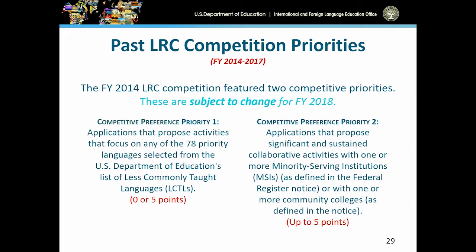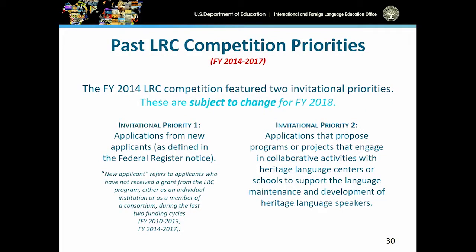Our current LRC invitational priorities — which may be subject to change — include: first, applications from new applicants as defined in the Federal Register notice. If you're listening in for the first time and you're not a current grantee, you're not at a disadvantage — we're encouraging you to participate and apply for this next round of grant awards. The second invitational priority is for applicants proposing programs or projects that engage in collaborative activities with heritage language centers or schools that support the language maintenance and development of heritage language speakers.